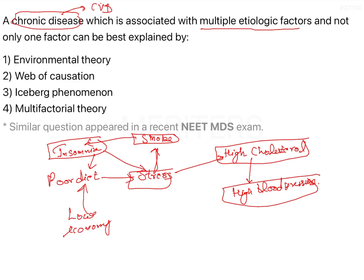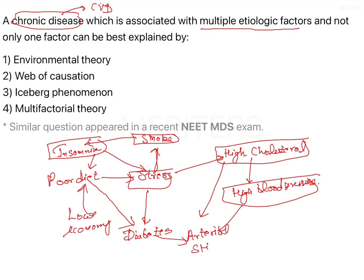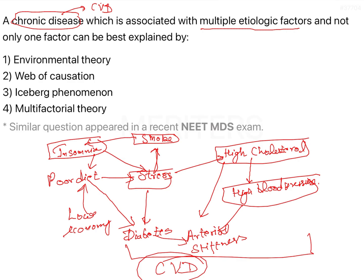Due to stress itself, there can be development of diabetes, and due to poor diet there can also be diabetes. Due to factors like high blood pressure, diabetes, and high cholesterol, there can be arterial stiffness, which is going to lead to cardiovascular disease.